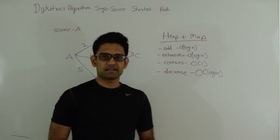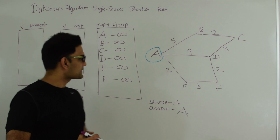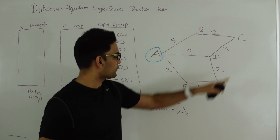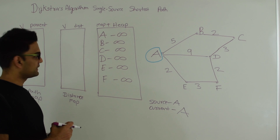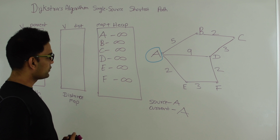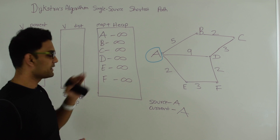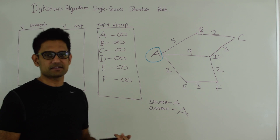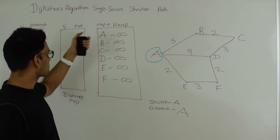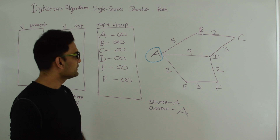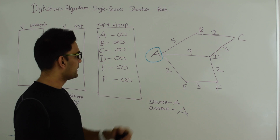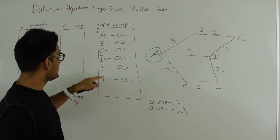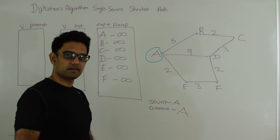Now let's see how Dijkstra's algorithm works. We're going to run it on this undirected graph where the source vertex is A, and we are trying to find the shortest distance of every other vertex from A. We put all the vertices in the heap-plus-map data structure with distance infinity from A, because we don't know how far they are from A yet. Then we set A's distance to 0 and do an extract min to get A out, then explore all its neighbors and update their distances — B: 5, D: 9, and E: 2.